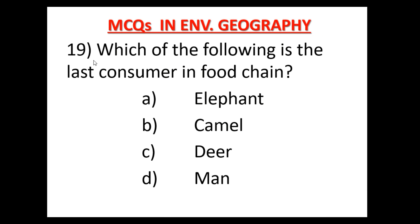Question number 19: Which of the following is the last consumer in the food chain? Food chain में अंतिम उपभोक्ता कौन होता है? Option A: Elephant, Option B: Camel, Option C: Deer, Option D: Man. Man is the last consumer in the food chain — मानव भी अंतिम उपभोक्ता होता है। Therefore, Option D is the correct answer.